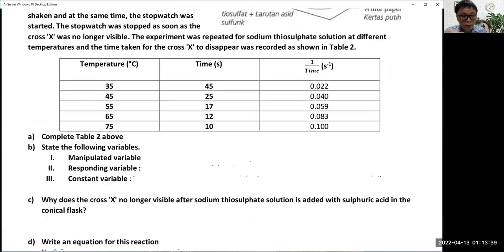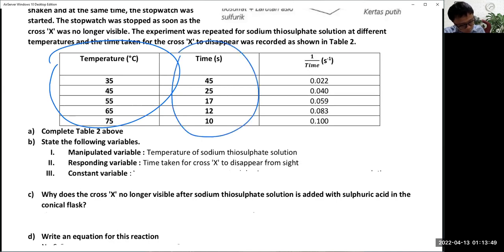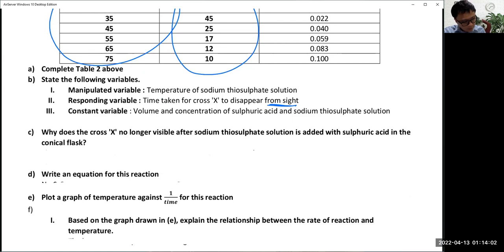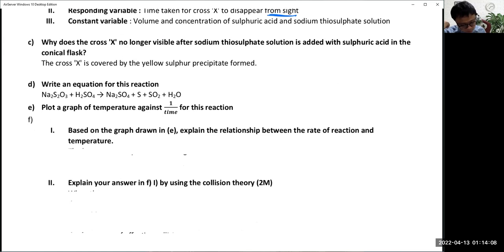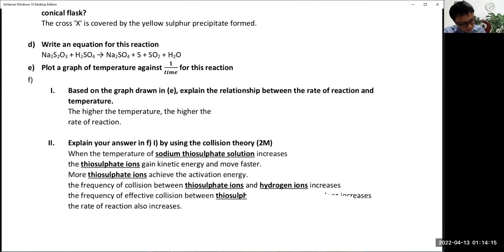Move on to the next question. We use one divide by time. The manipulated variable is temperature. The responding variable is the time taken for X mark to disappear from the side. Constant variables are volume and concentration of sulfuric acid. Why is the X mark no longer visible? Because the sulfur will cover it. The higher the temperature, the higher the rate of reaction. The thiosulfate ion moves faster, more thiosulfate ion achieves the activation energy, then thiosulfate ion will collide more with hydrogen ion.